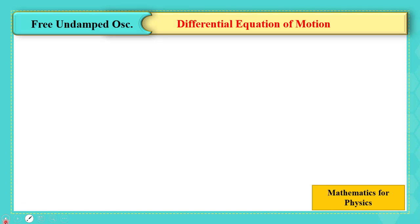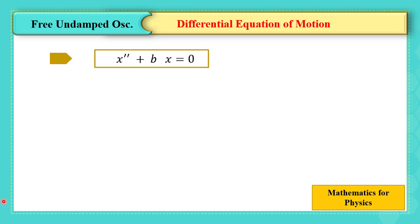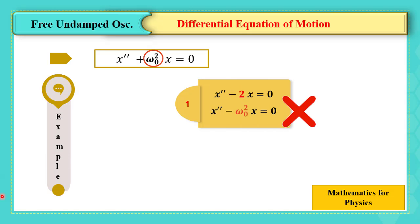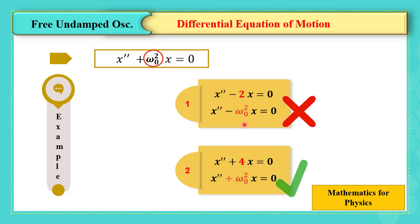We are going to deal with the special case where a positive constant is multiplied with the original function x. For example, if we have x double prime minus 2x equals to 0, here minus is multiplied by omega 0 squared, so the coefficient of x is negative — this is not the case we are going to study. In the second example, x double prime plus 4x equals to 0, the coefficient plus 4 is positive, equal to plus omega 0 squared — this is the case we are going to study.